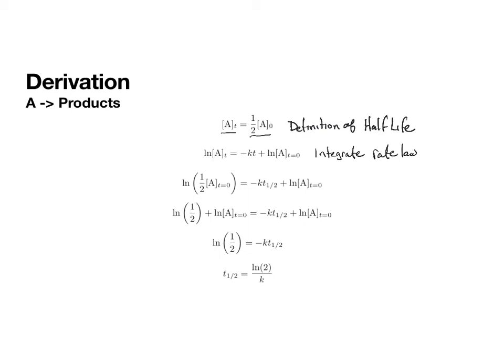In the first step, the first thing that I do is I combine these two expressions. So I plug in one-half [A]₀ for the concentration of A at time t, and I convert the t to t₁/₂ to show that I am working with the half-life.